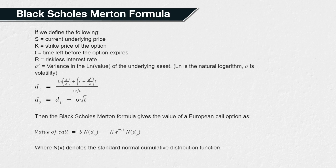As I said, we're not going to spend time analysing how this is derived. It's beyond the scope of this course, and it's not necessary for a basic understanding of options. However, what we are going to look at in a little more detail is the last term of the formula, N(d2).